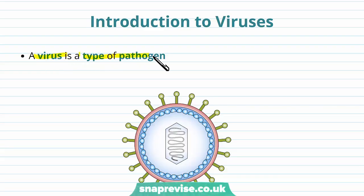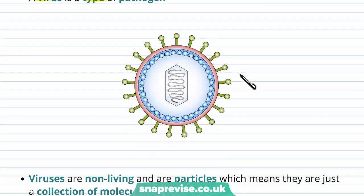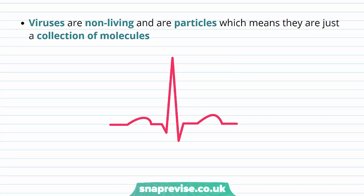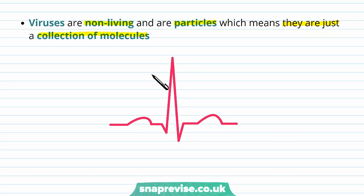Viruses are a type of pathogen, which is a harmful agent that can cause disease. Other pathogens include things like bacteria and fungi, but a virus is a specific type and there are many different types. We describe viruses as being non-living because they don't really reproduce on their own — they're basically just a complex particle, not an actual cell, just a collection of different molecules held together.